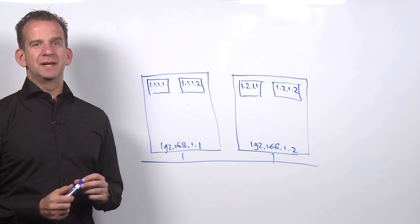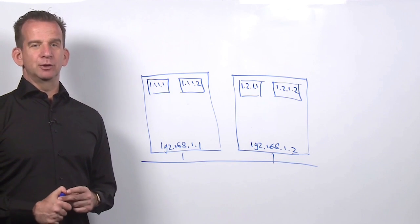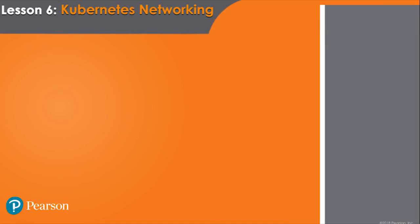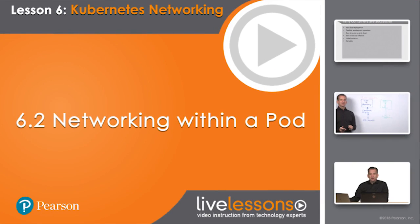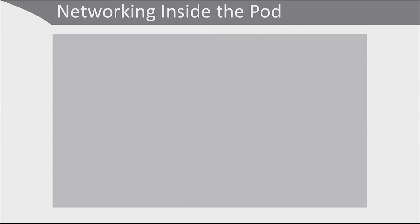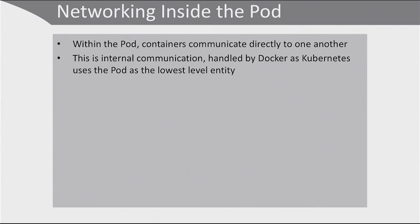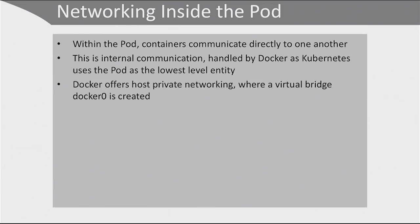This is also what you will encounter when you explore the networking that is created in a minikube environment, for example. Now let's talk about networking within a pod. Within the pods, containers communicate directly to one another. This is internal communication which is handled by Docker, as Kubernetes uses the pod as the lowest level entity. So the networking within the pod is not handled by Kubernetes at all — something important to consider in your design.